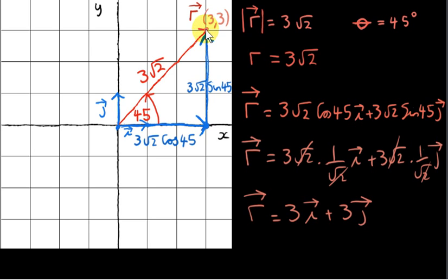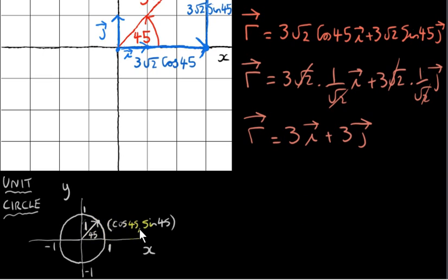We can clearly see from the diagram that the coordinates of this point are 3, 3. Another way to understand this is to consider the unit circle of trigonometry. From trigonometry, the coordinates of a point on the unit circle — a circle with radius of 1 — are given by cos theta, sin theta, where theta is measured anti-clockwise from the positive x-axis. So here's the positive x-axis, and in this case theta is 45 degrees. So the coordinates of this point are cos 45, sin 45.